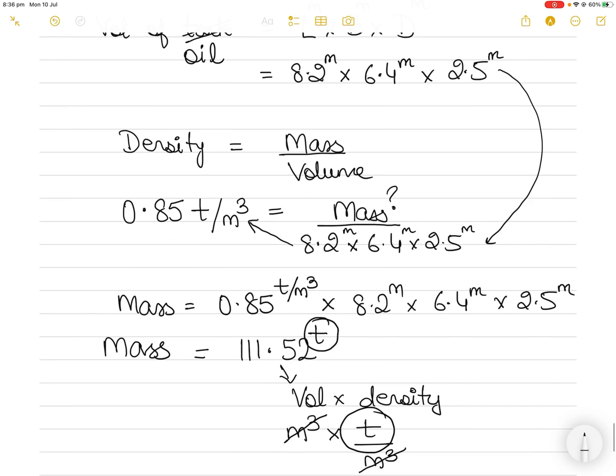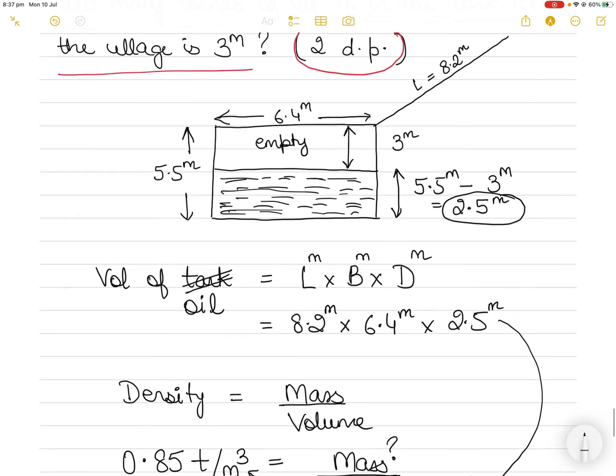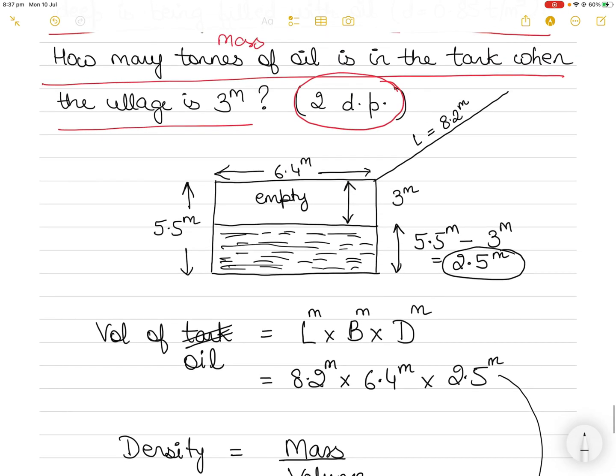Alright and of course these three values are in the denominator. They will go to the other side of the equal to sign and they will be multiplied to the density to find the total mass of the oil. Remember this is the mass of the oil contained in the tank or loaded in the tank when we have to leave an ullage of three meters.